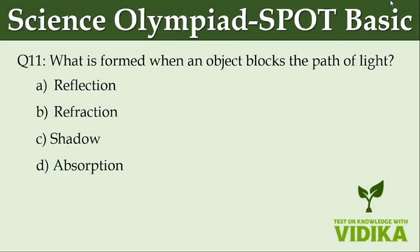What is formed when an object blocks the path of light? Option A, reflection. Option B, refraction. Option C, absorption. Option D, shadow.